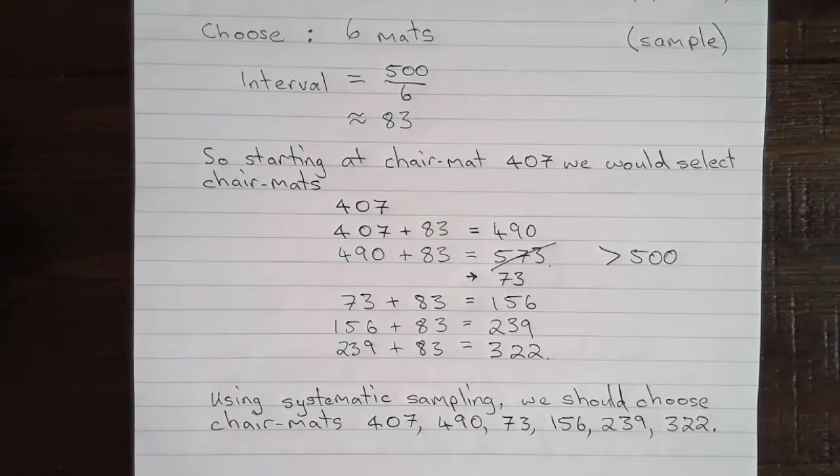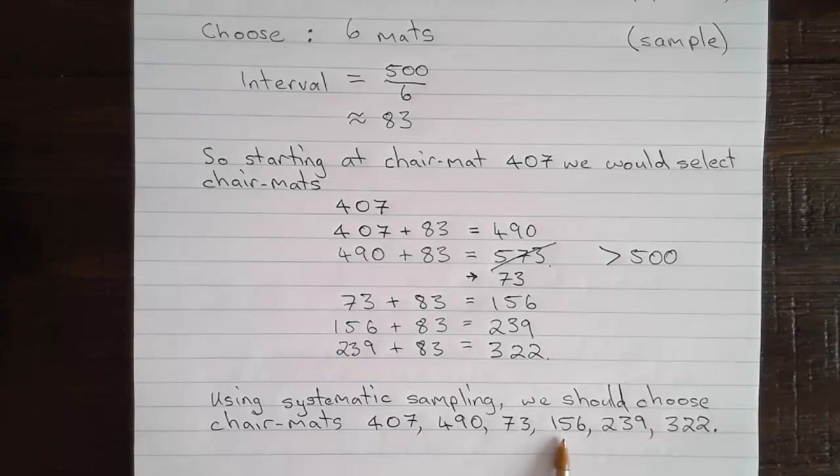So to finish off and answer our question with a full sentence, we could say something like, using systematic sampling, we should choose chair mats number 407, 490, 73, 156, 239 and 322.